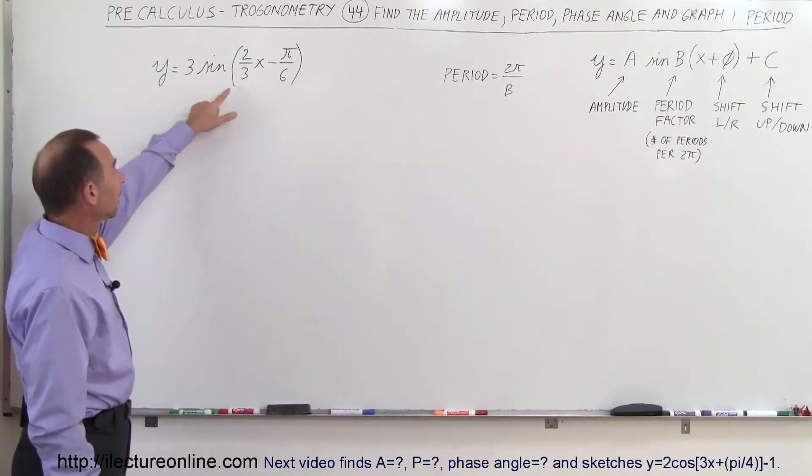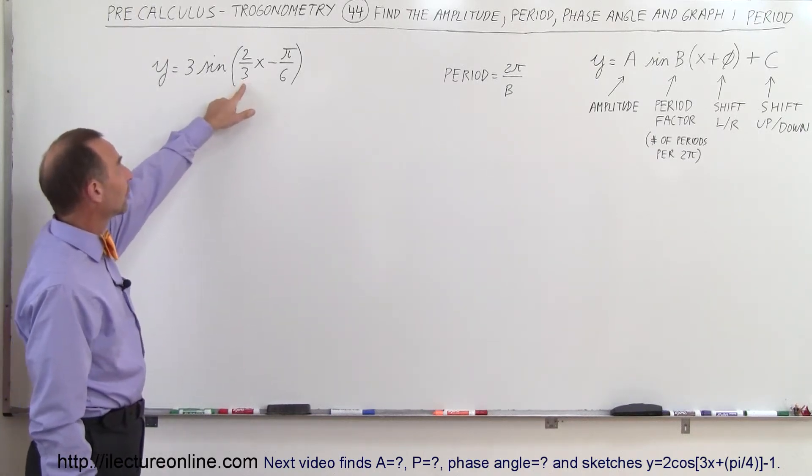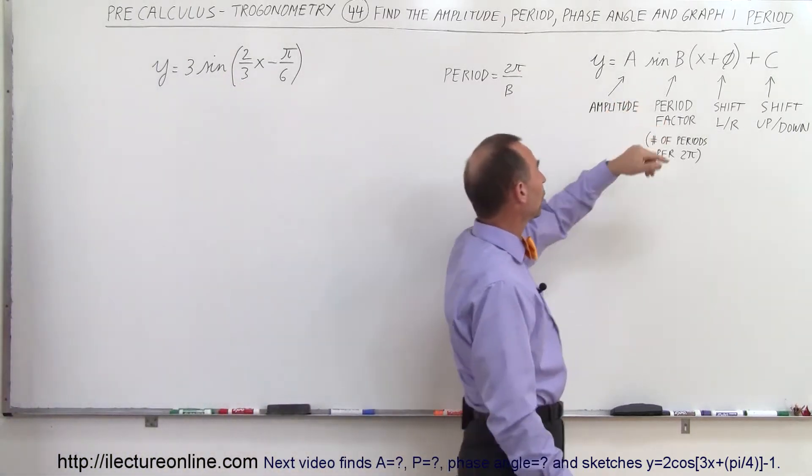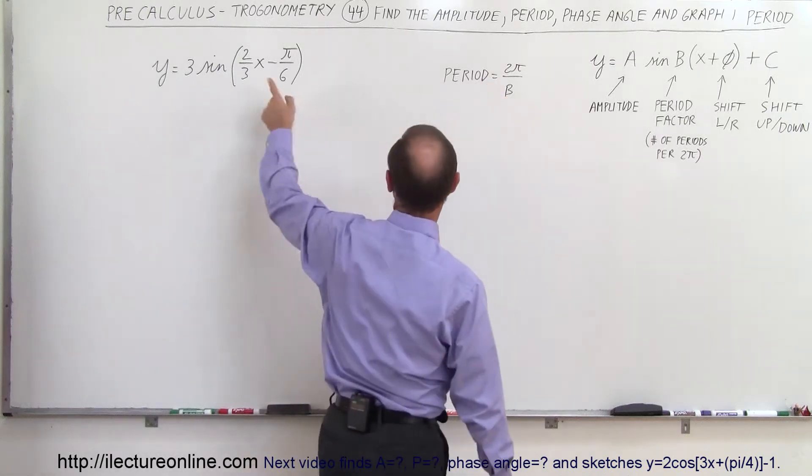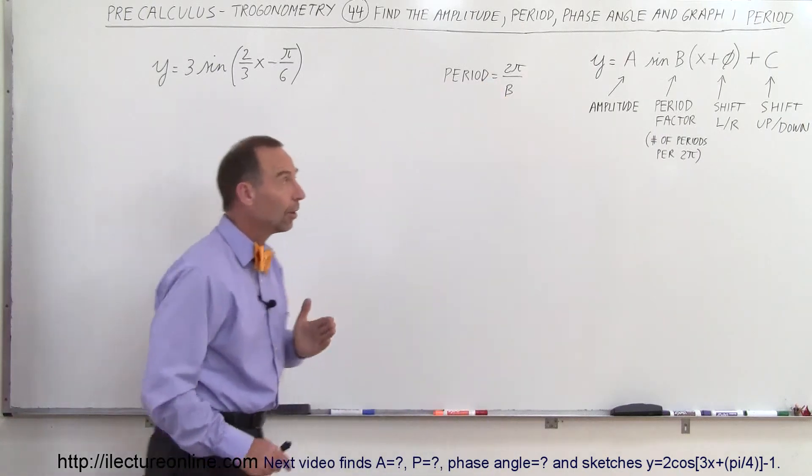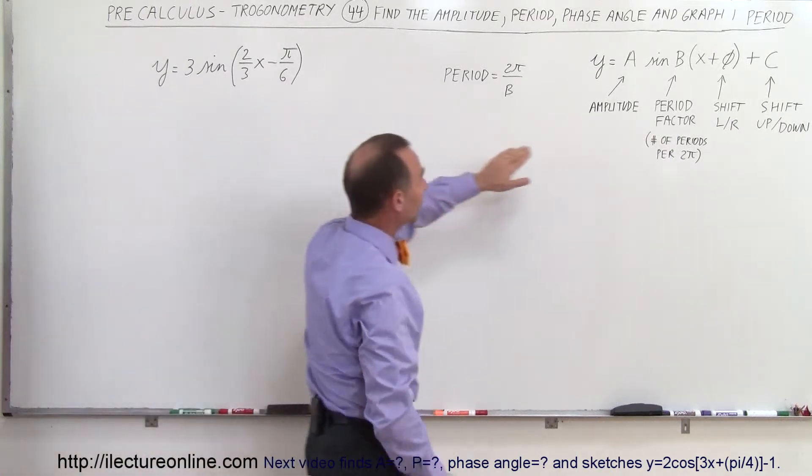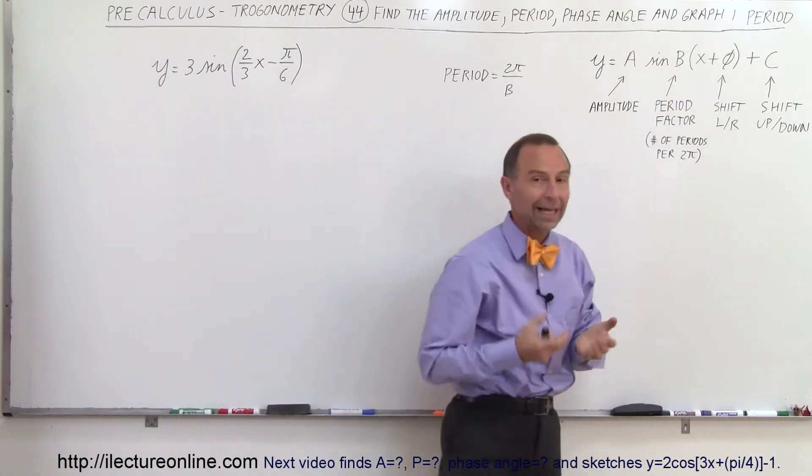Quite often people look at this and say, oh, I see what the period factor is, it's two-thirds. So they look over here and say B equals two-thirds, and then they go on and find the period by taking 2π divided by two-thirds. But that's not the case. Make sure you take a look at this and say, this does not look the same as the base form of what the function should look like.